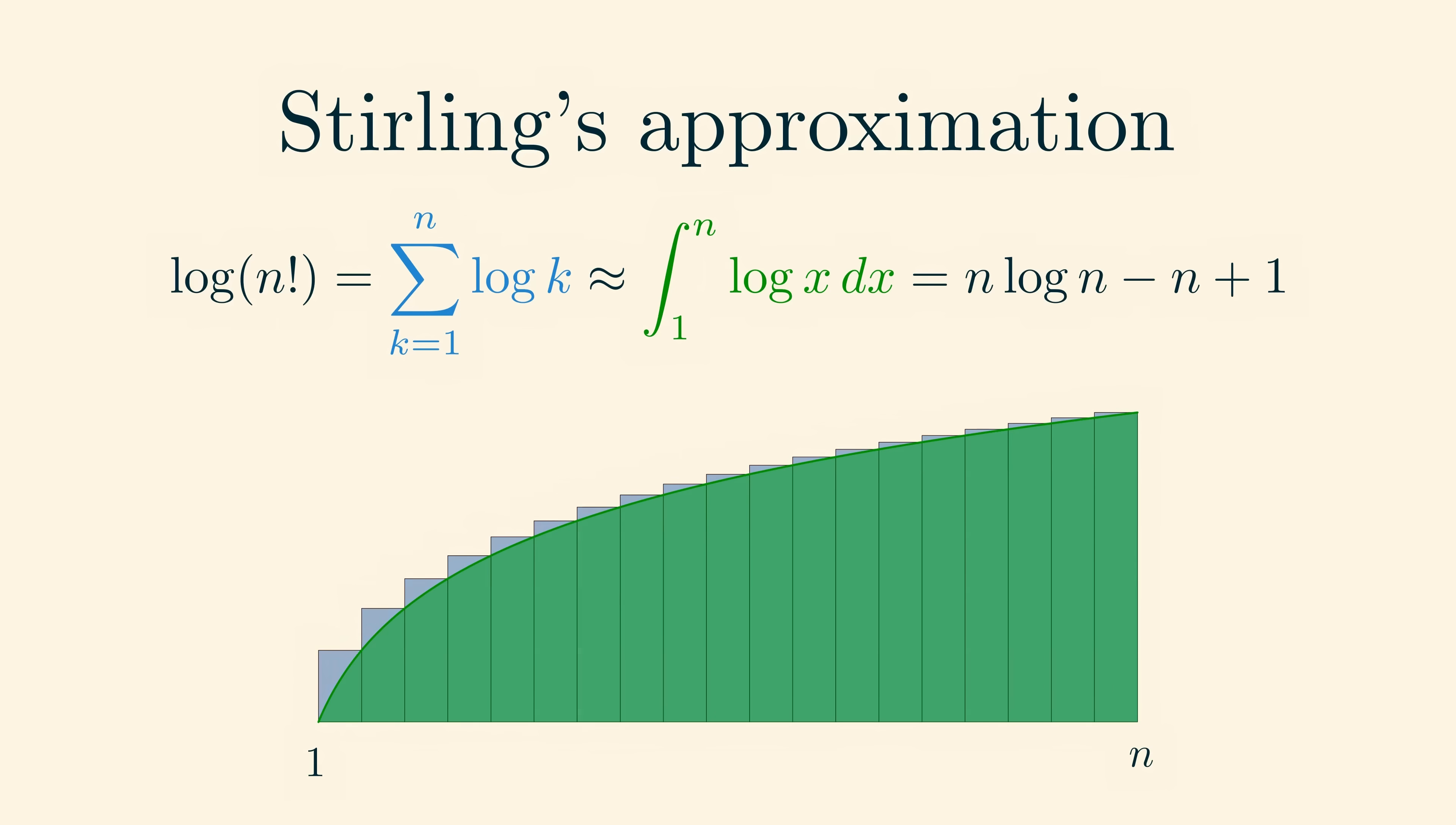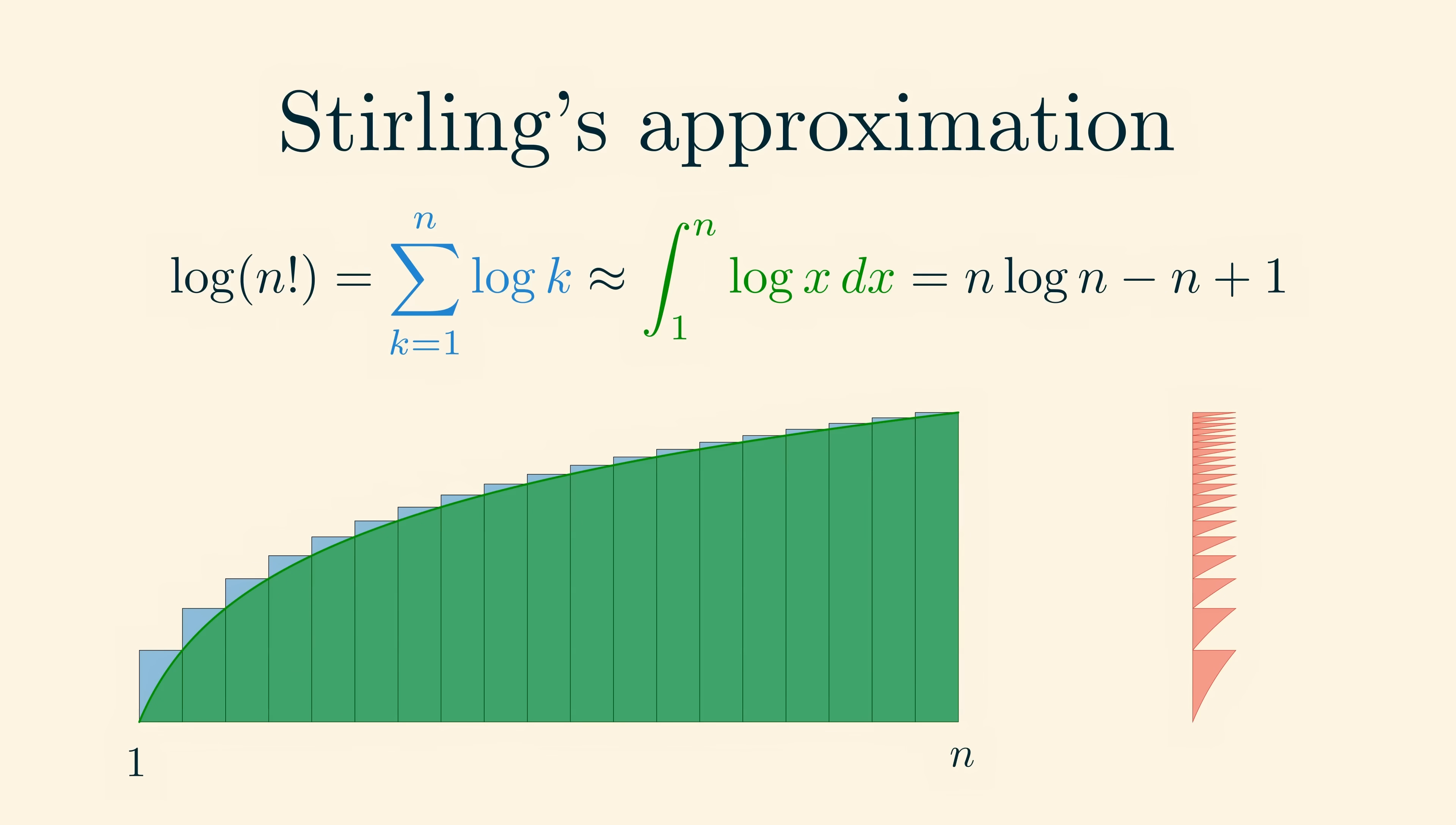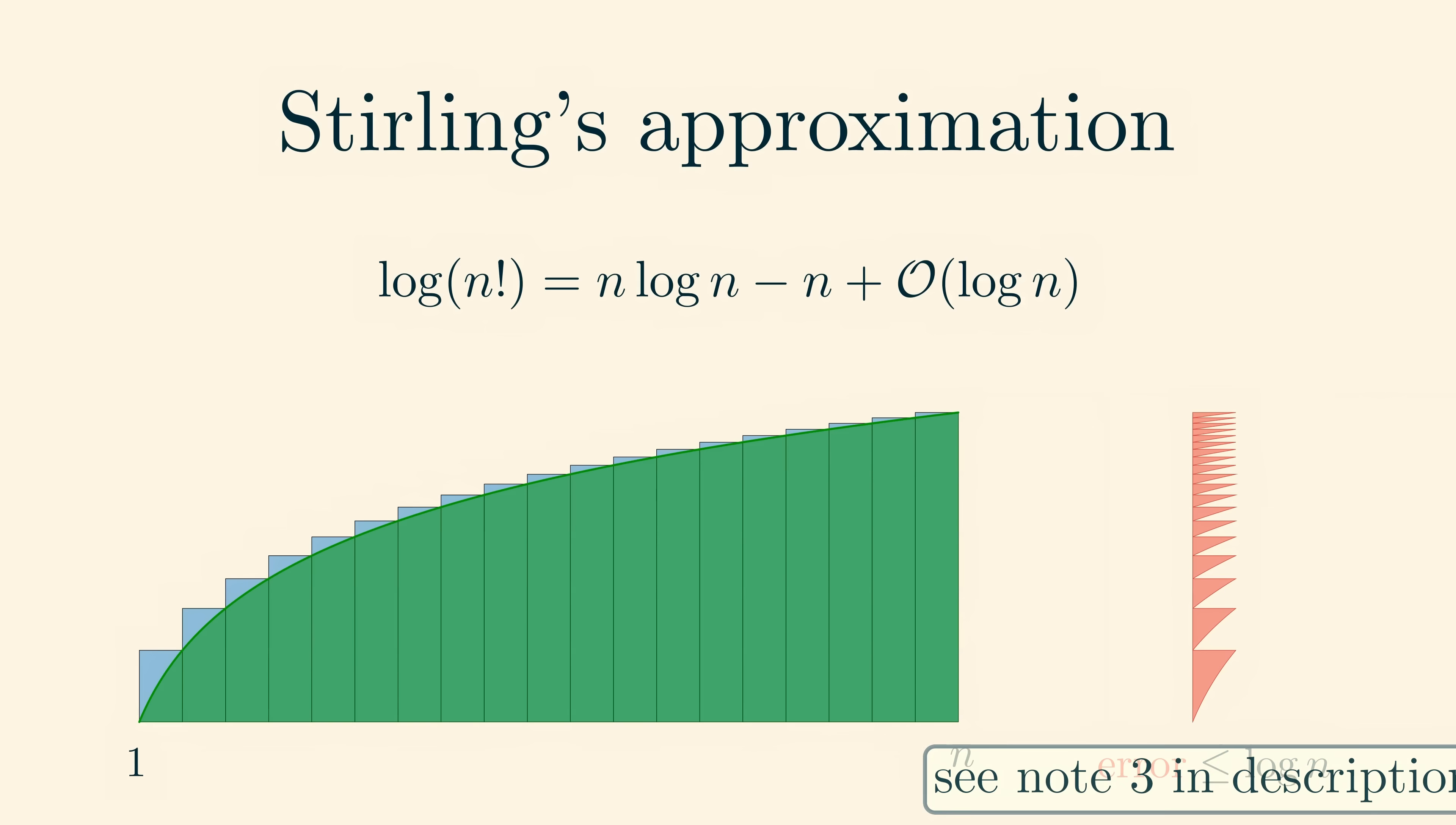Also, the total size of the pieces that we're missing in the approximation of the sum by the integral is at most log n, so the error in our approximation is only logarithmic in n. We can also just absorb this plus 1 into that error and get that log of n factorial is n log n minus n plus an error of order log n. That's what this notation with an o means.